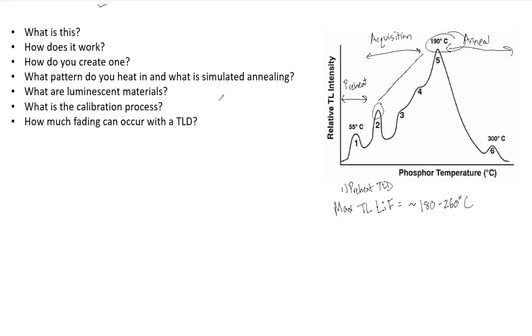What pattern do you heat in and what is simulated annealing? I kind of already discussed some of this, but you have to remove the previous radiation and the thermal history. That's why we have to anneal this. For lithium fluoride, this is around 400, ranges 300 to 400 degrees Celsius. Just know it's hundreds of degrees Celsius, and you want to do that for one hour.